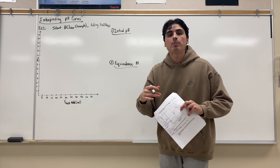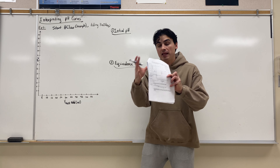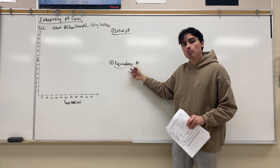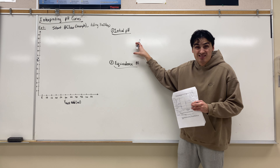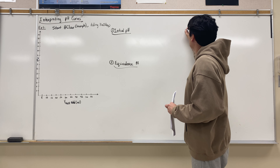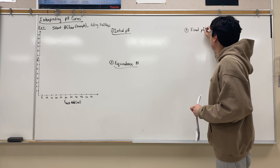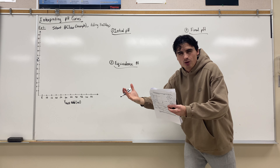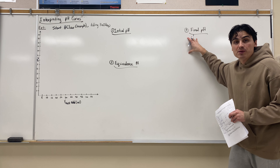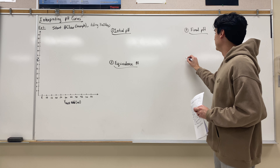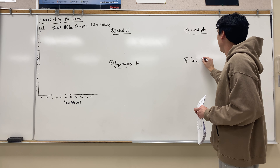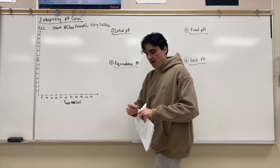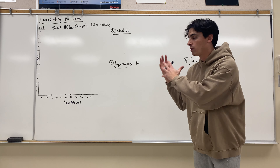The equivalence point represents the volume required to completely neutralize and eliminate whatever you started with. So if we start with HCl, the equivalence point is how much NaOH we had to add to completely get rid of it. Then the third thing we calculate is our final pH — after the HCl is gone, you still have NaOH left in your burette, so you keep adding it and find the final pH. The fourth thing is our endpoint, which we determine using the previously calculated information to find at what pH this occurs. That's our four-step process.